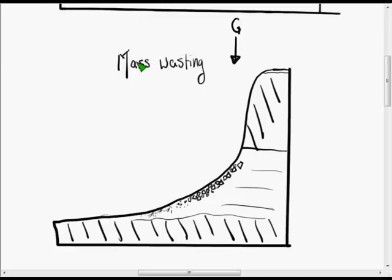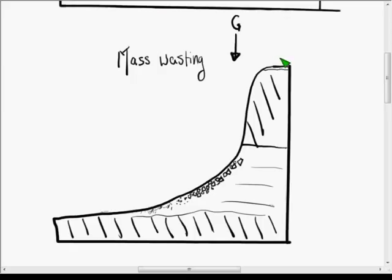Mass refers to large bodies of material moving under the influence of gravity. Wasting is just another word for erosion. Up here where the terrain is flat, there is a little bit of a slope and you're going to have a very slow movement of soil down.